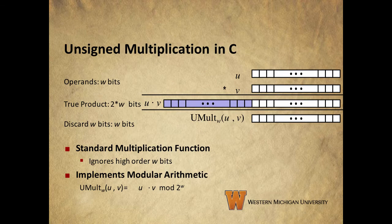So what does this mean for us? Simply that, as with addition, C implements modular arithmetic with multiplication. Since we drop our highest-order w bits, we effectively get an answer that is equivalent to the product of the two operands, mod 2 to the w.